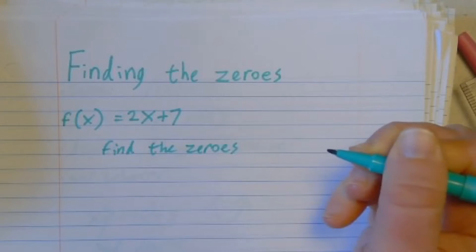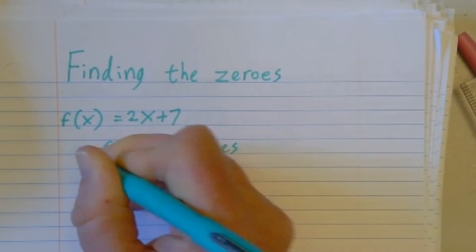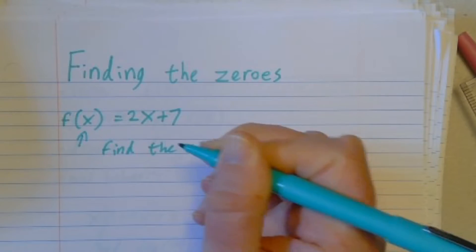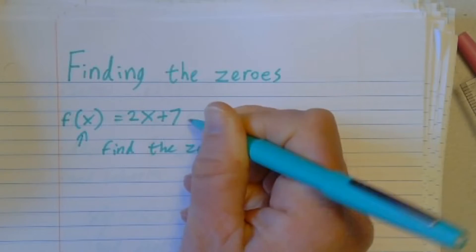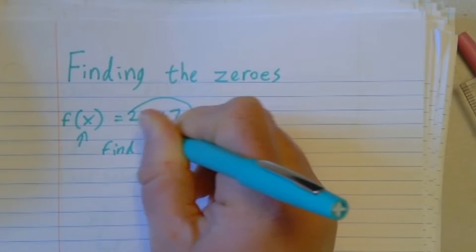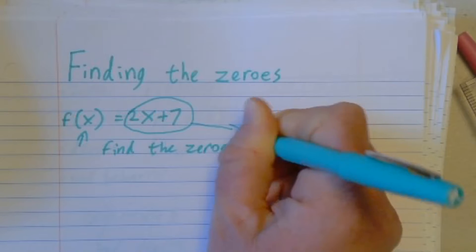Then what I'm doing is I need to figure out what number to put in for x so that this whole thing spits out a zero.